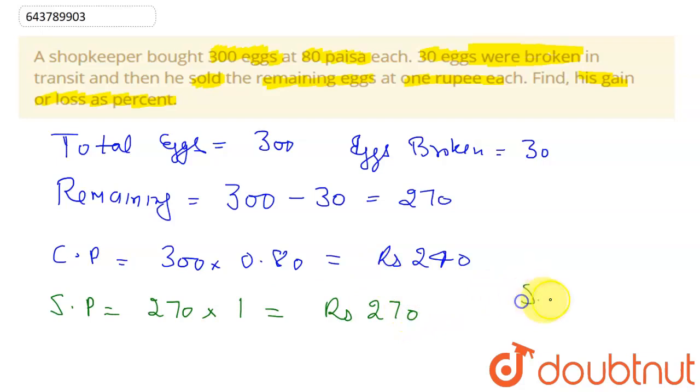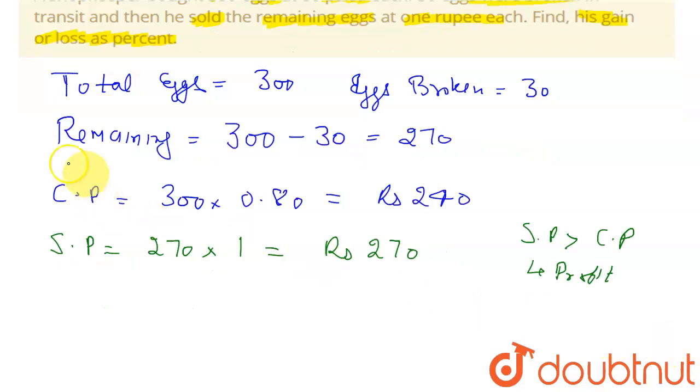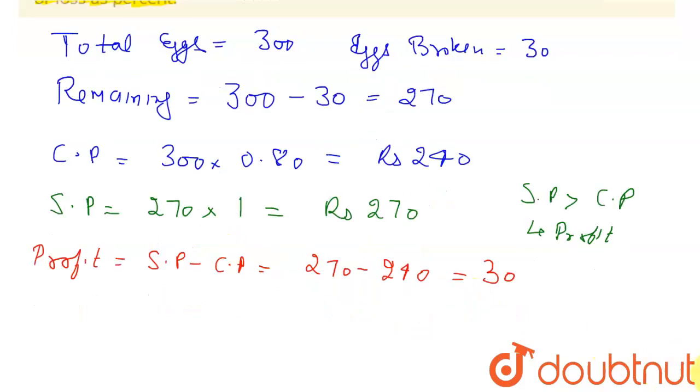Now as SP is greater than CP, so he will be having a profit. And that profit will be equal to selling price minus cost price, which will be equal to 270 minus 240, which will be equal to 30 rupees. And to find the percentage of profit, we can write our formula profit percentage...